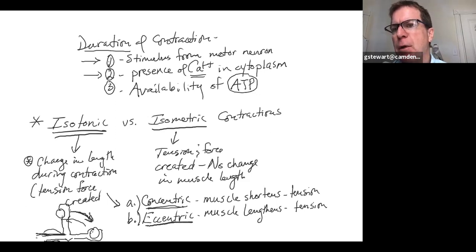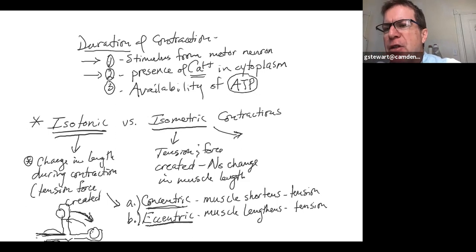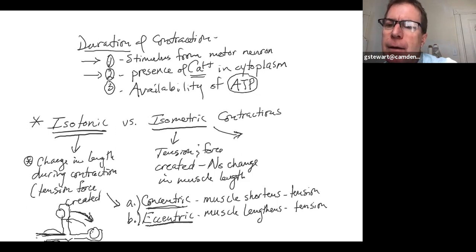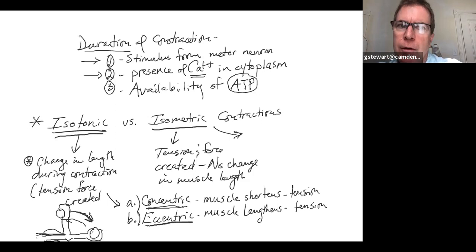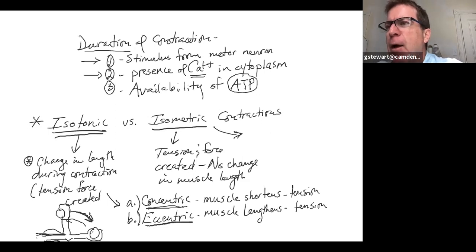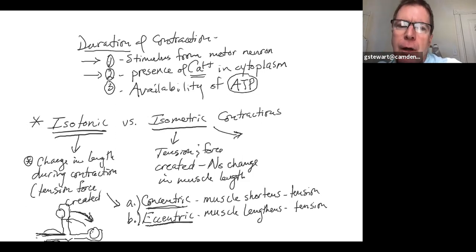Isometric: tension and force are created but there's no change in muscle length. Force is still produced in the muscle without a change in muscle size or length. Picture trying to lift an object that's too heavy to actually lift - there's no change in muscle length or shape, but force is still created. Like trying to push over a wall or lift an automobile - your muscles still create force and tension, but there's no change in length. That would be isometric.